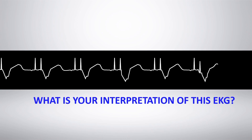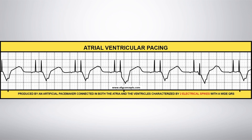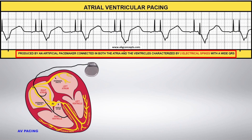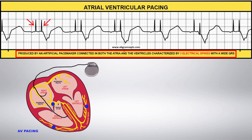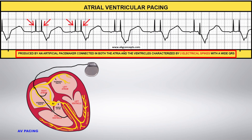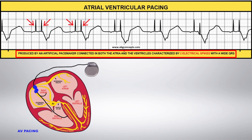What is your interpretation of this EKG rhythm strip? Atrial ventricular pacing, or AV pacing. In AV pacing, both the atria and the ventricles are being paced with a pacemaker lead in the atrium and the ventricle.